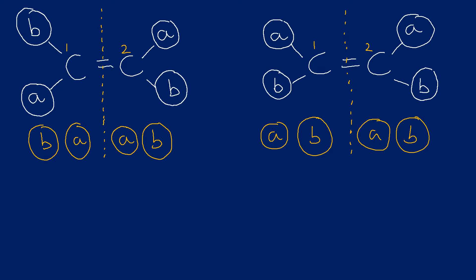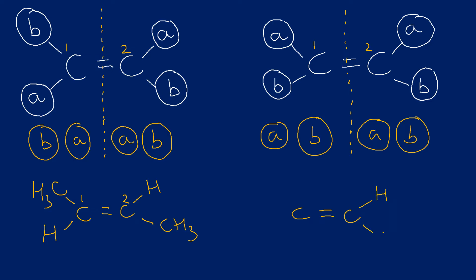Don't mistake symmetric and asymmetric with E and Z, because it's not the same thing. Symmetric and asymmetric is talking about the symmetry around that double bond; it's not talking about isomerism. For example, the alkene on the left could be one structure and the alkene on the right a different structure - they are in fact isomers of each other, and more on that in the next video. But they are both symmetric alkenes.